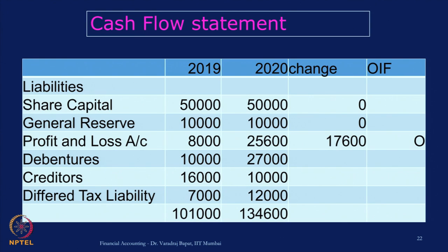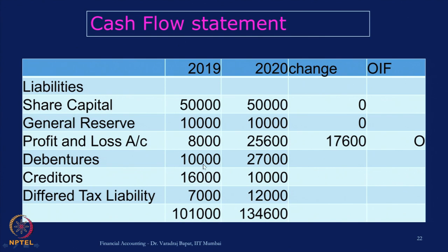The next item is debentures. You can see debentures have increased from 10,000 to 27,000 — that is an increase of 17,000, meaning new debentures have been issued. So we consider it as an F type of item, that is, a financing item.